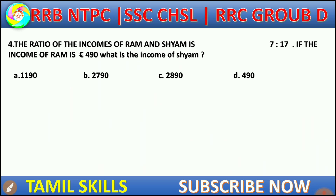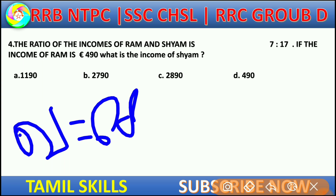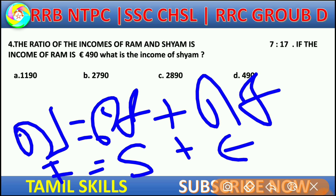Now let's talk about the ratio of income. The formula is: Income equals Savings plus Expenditure, that is I = S + E. The ratio of the income is 7 is to 7.